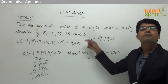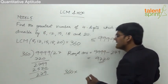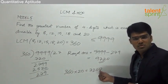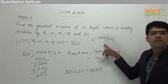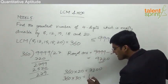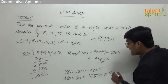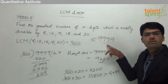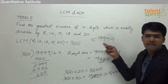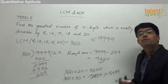Another way to find the answer is by trial and error. We know the LCM is 360, so we try different multiples of 360 to get as close as possible to 9999 without exceeding it. For example, 360 × 20 = 7200, which is far below 9999. Then 360 × 30 = 10800, which is close to 9999 but greater than it — so it's ruled out as it's a 5-digit number.